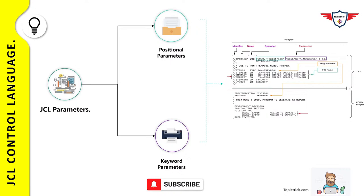Keyword parameters have no special position or order; however, they follow any required positional parameters within a job statement. For example, the keyword parameters MSGCLASS and MSGLEVEL are coded after the positional parameters — accounting information and username. A keyword parameter is always followed by an equal sign and a value. MSGCLASS and MSGLEVEL are the two keyword parameters used in the job statement.